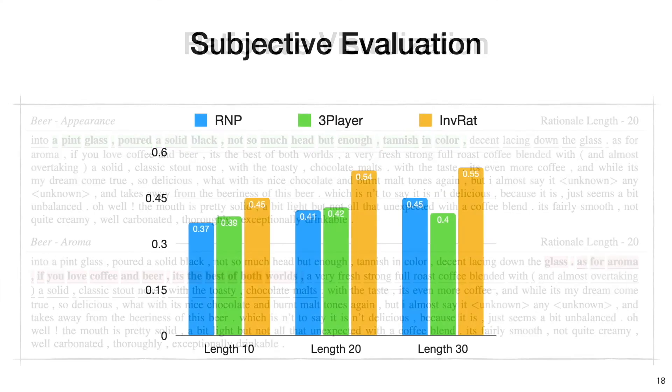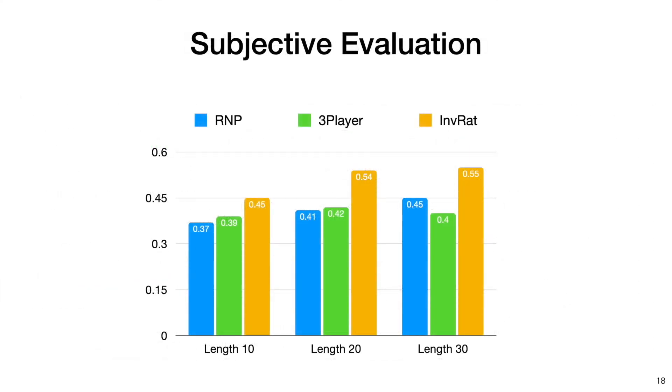We also perform a subjective evaluation, where the subject is presented with the rationale of one aspect of the beer review, generated by one of the three methods, where the unselected words are blocked. And they are asked to guess which aspect the rationale is talking about. This plot shows the accuracy of those responses, which again verifies that our algorithm can better select the correct aspects.